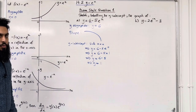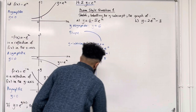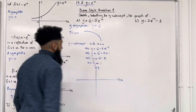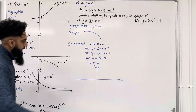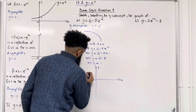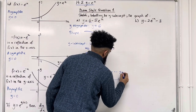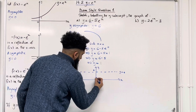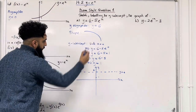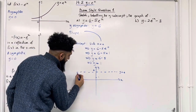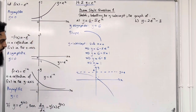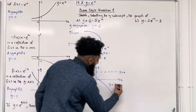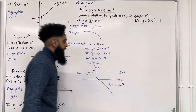Now I'm going to sketch the graph. The y-asymptote is y equals 6, and the y-intercept is 1. The graph looks something like this. So that there is the graph y equal 6 minus 5 e to the power x.